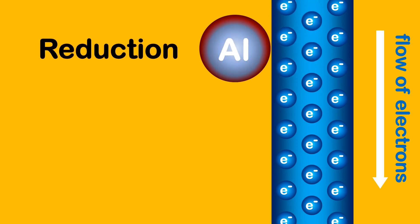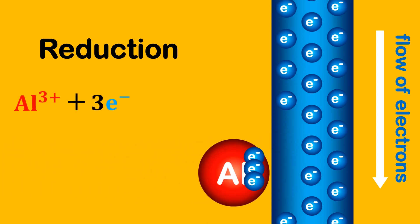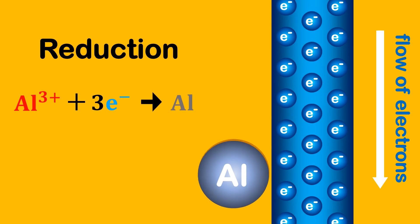This can be represented by an ionic half equation. This ionic half equation shows a plus 3 aluminium ion gaining 3 electrons and becoming a neutral atom.